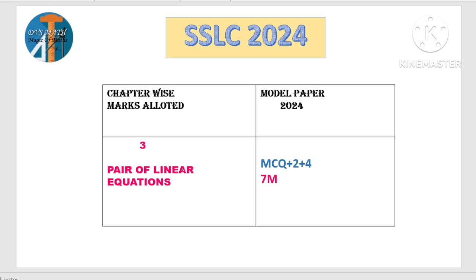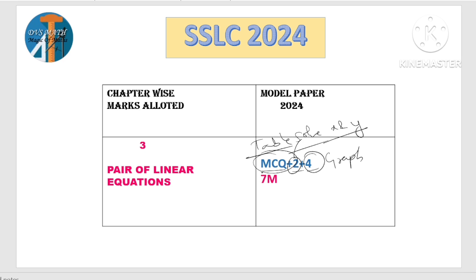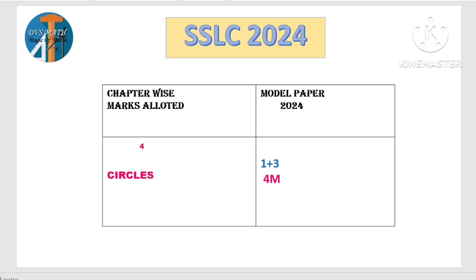Pair of linear equations: MCQ ಒಂದು, 2 marks ಒಂದು, 4 marks ಒಂದು — this 4 marks is graph. 2 marks ಅಲ್ಲಿ solve for x and y. MCQ ಒಂದು — a table related to intersecting, coincident ಅಥವಾ parallel ಅದಕ್ಕೆ related ಆಗಿ. So 7 marks for pair of linear equations.